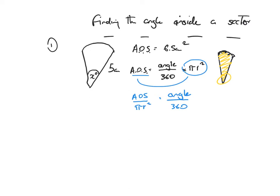Where did that come from? The area of the sector is equal to the angle over 360 times pi r squared, so all I've done is bring that times pi r squared across and divide. So area divided by pi r squared is equal to the angle over 360.